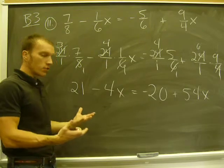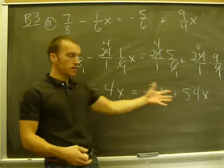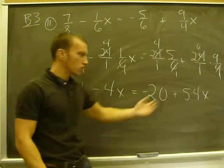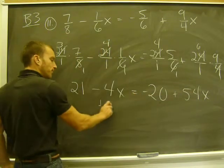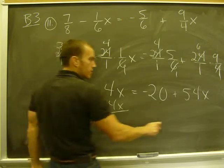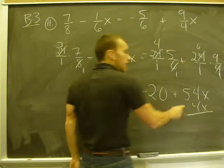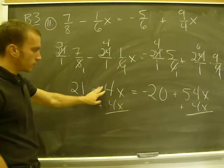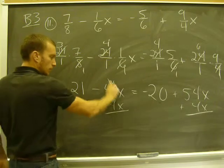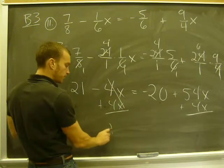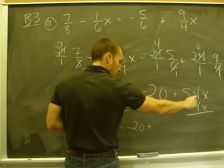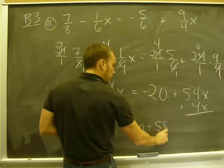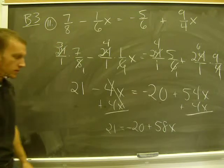So I have one of two options. I could add the 4x to both sides and eliminate it from the left side, or I could subtract 54x from both sides and eliminate it from the right. I'm going to choose to add 4x. Doesn't matter. In the end, you'll get the same result. So negative 4x plus 4x is 0. That leaves 21 equals negative 20 plus 58x if I add those together.